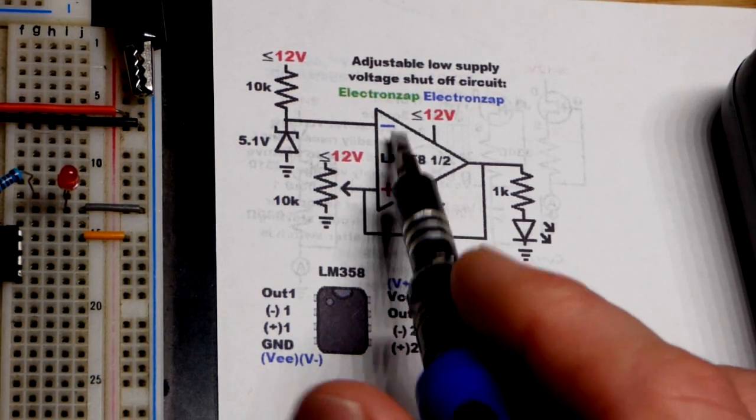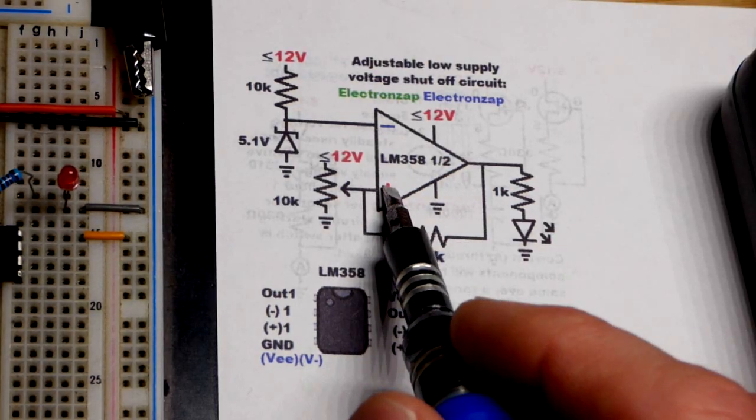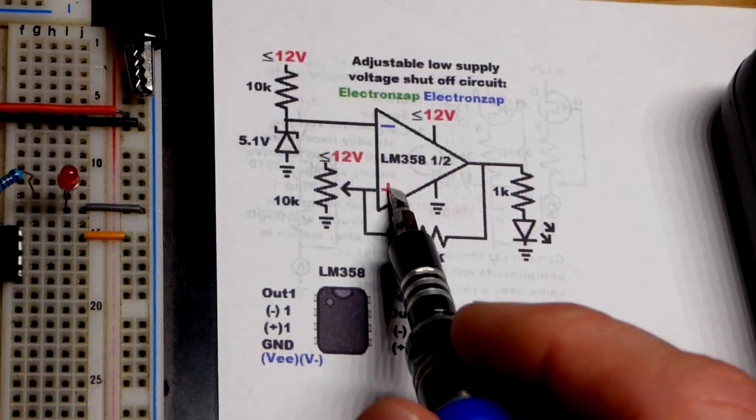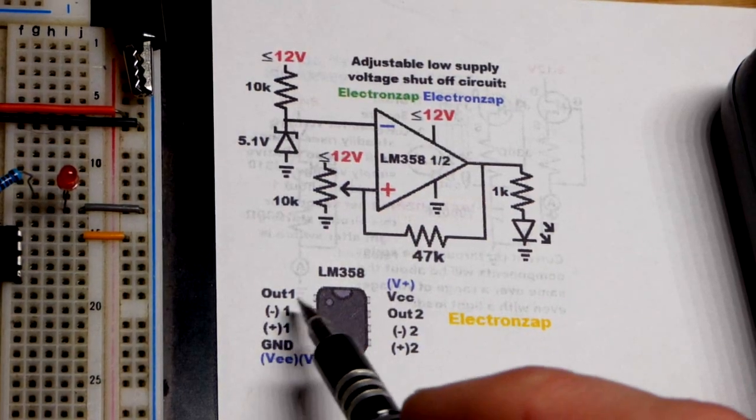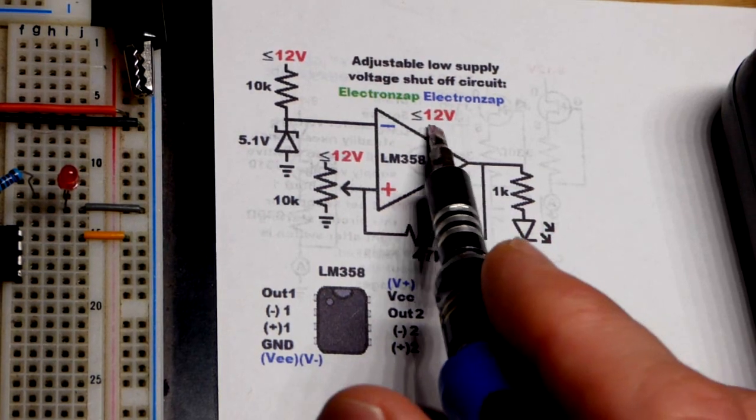On the schematic though, sometimes they put the plus, the non-inverting, above the inverting, the minus there. But we didn't do that there. But always pay attention to which side the plus and minus are. Remember the physical component will not always be the same as what's on the schematic. And we got the power pins there.